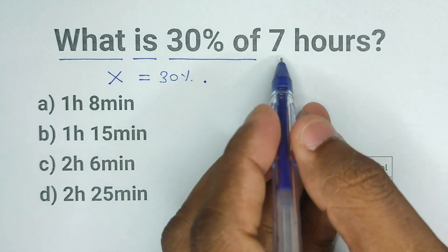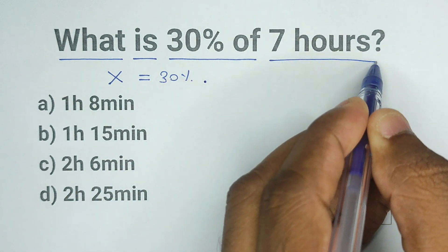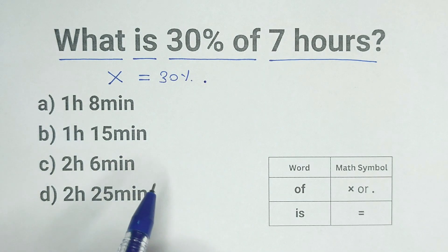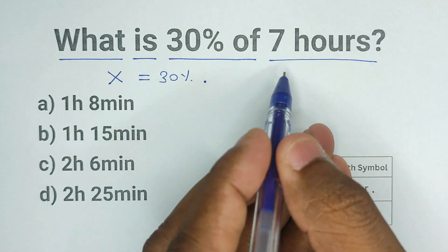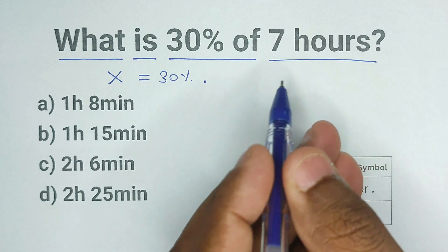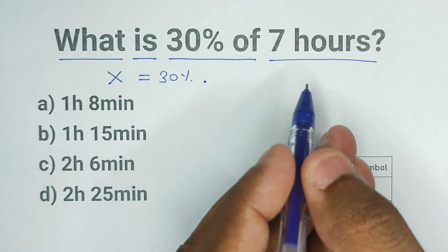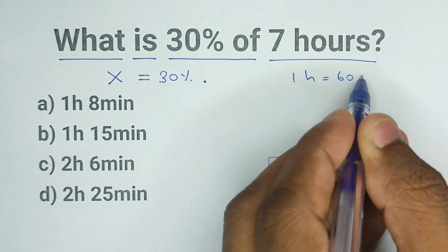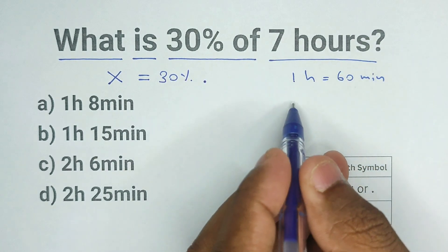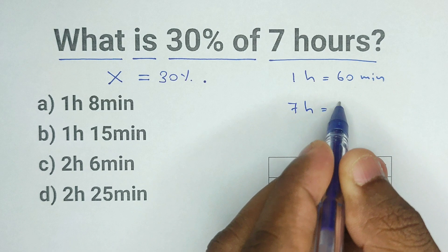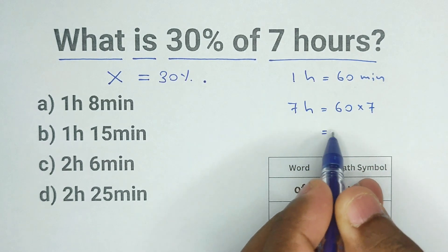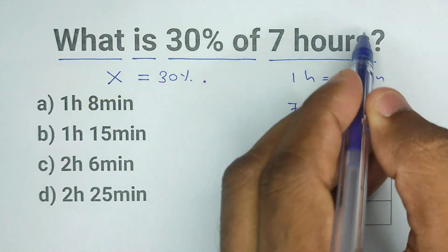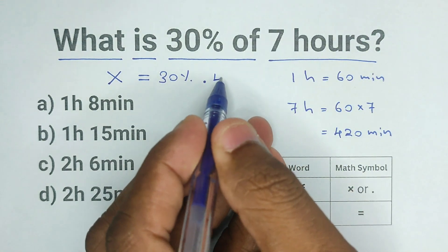The last two words are 7 hours. Now if we look at the answers, we can see all the answers are in hours and minutes. So it's good if we get our answer in minutes because then we can easily convert it to hours and minutes later. We know 1 hour equals 60 minutes. So for 7 hours we have to multiply this by 7. 60 times 7 is 420. So instead of 7 hours, I'm going to write 420.